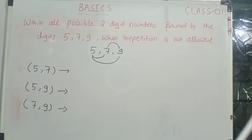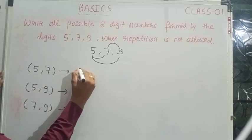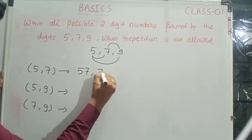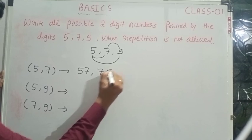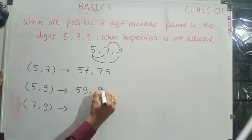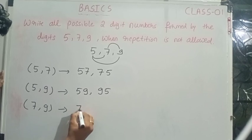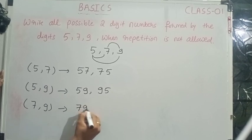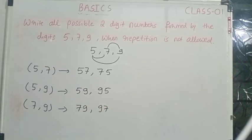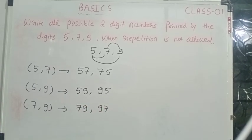Write all possible 2-digit numbers formed by the digits 5, 7, and 9 when repetition is not allowed. 57 and 75, 59 and 95, 79 and 97. These are all the possible 2-digit numbers.